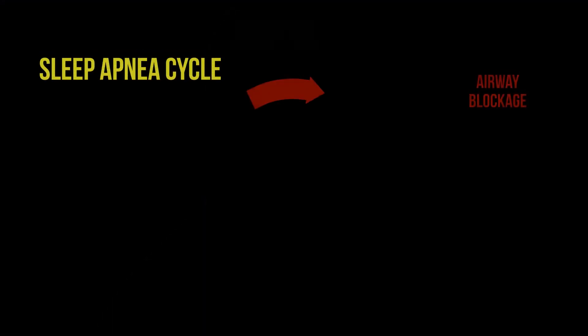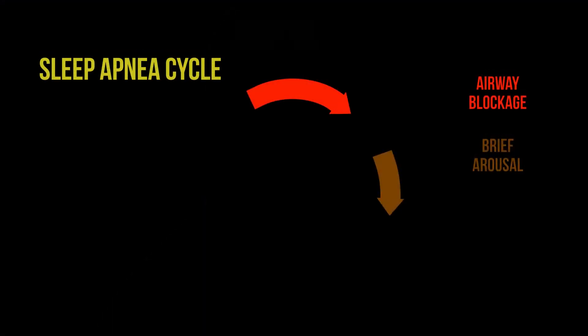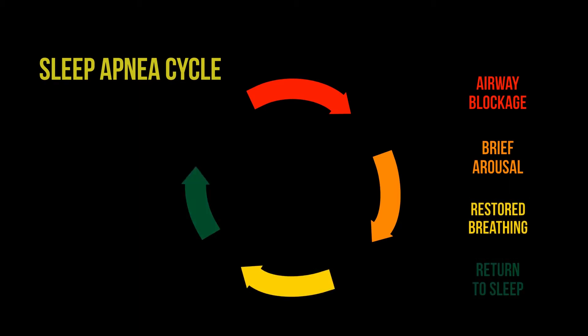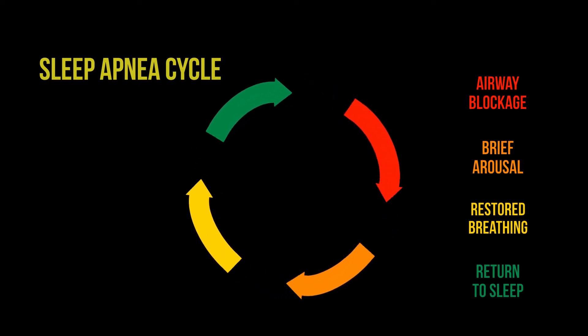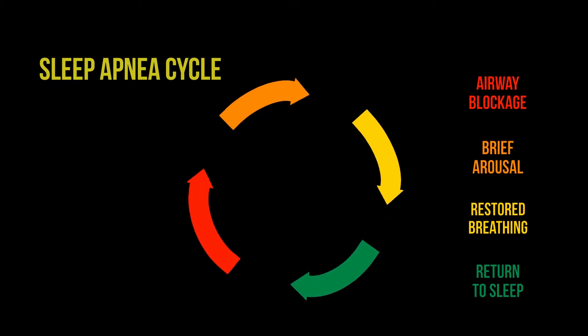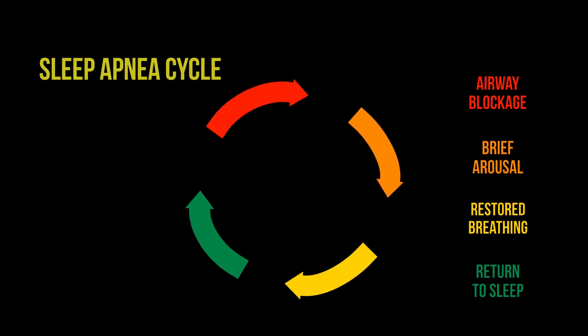These brief arousals are so quick that you are usually unaware of them. However, the arousals fragment your sleep and disrupt its restful nature. This cycle of airway blockage followed by brief arousal, which opens the airway and restores breathing, can repeat over and over while you sleep. The repetitive nature of this breathing problem can cause drops in oxygen and arousal from sleep to occur up to hundreds of times while you're sleeping. Obstructive Sleep Apnea also puts stress on other body systems, especially the heart and the brain.